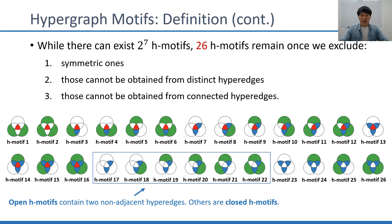Six H-motifs out of 26 contain two non-adjacent hyperedges, which we call open H-motifs. The remaining 20 H-motifs are closed.